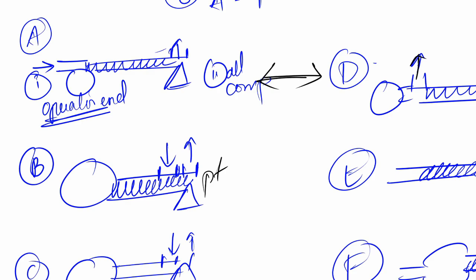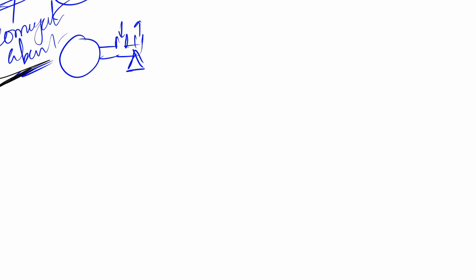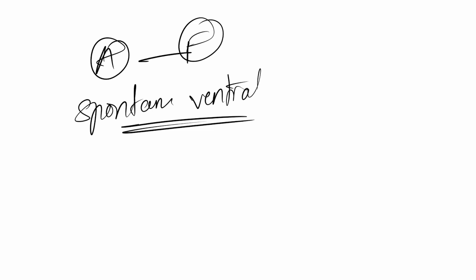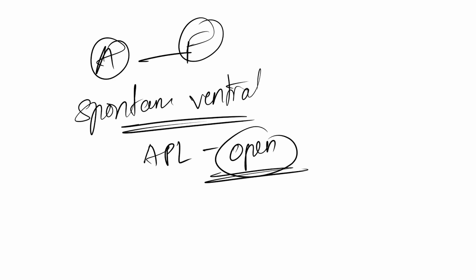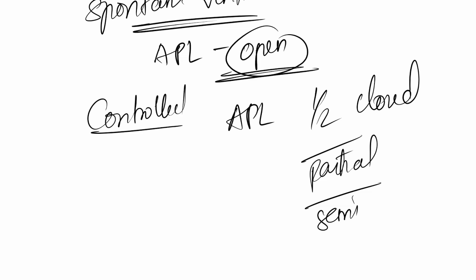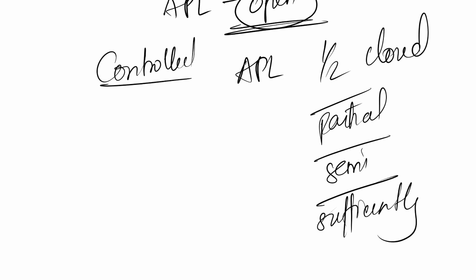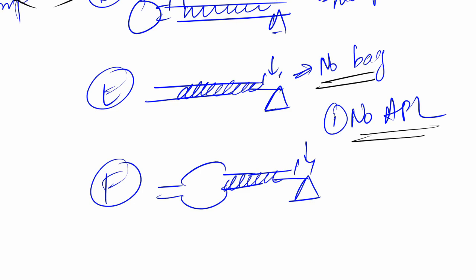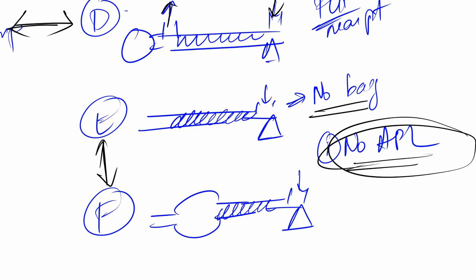In all circuits from A to F: if the person is undergoing spontaneous ventilation and able to breathe on their own, the APL is kept open. If we are supplying controlled breathing, the APL is partially or sufficiently closed — not necessarily exactly half closed, but sufficiently closed. Since E and F have no APL valve, spontaneous breathing cannot occur with Mapleson E and F circuits.